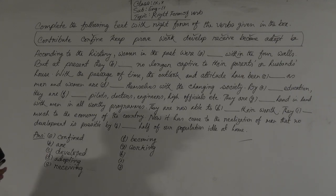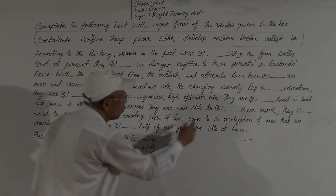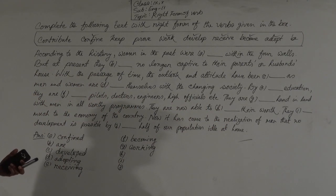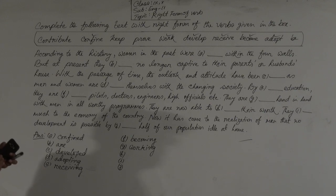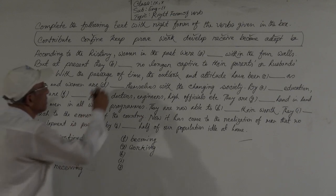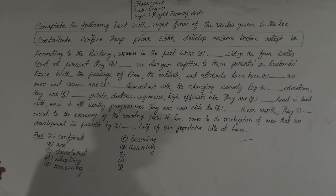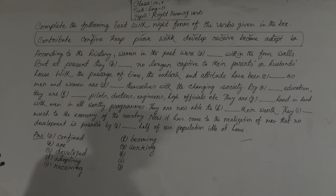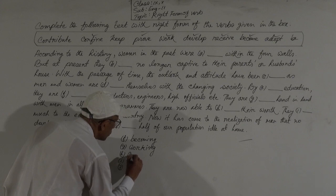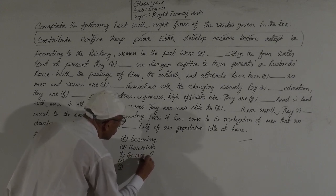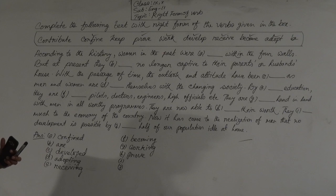They are now able to — this is an infinitive structure. After 'to,' the verb will be in base form. There is a verb 'prove' in the verb box. As it is infinitive, it will not be changed — it will remain 'prove.' So the sentence reads: they are now able to prove their worth.